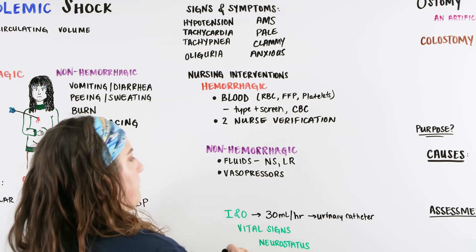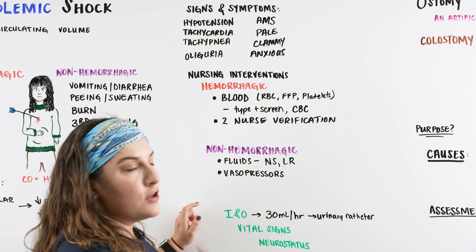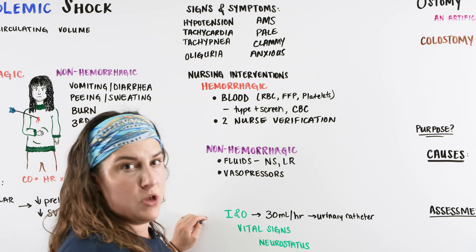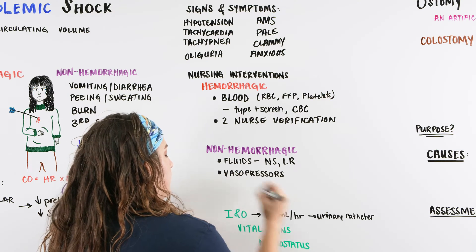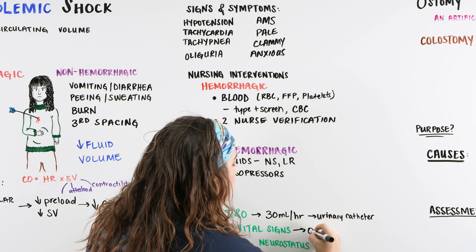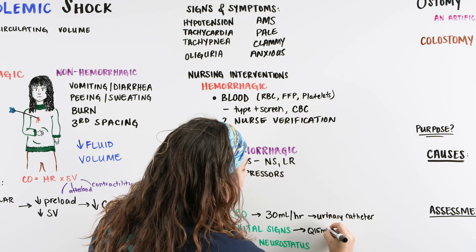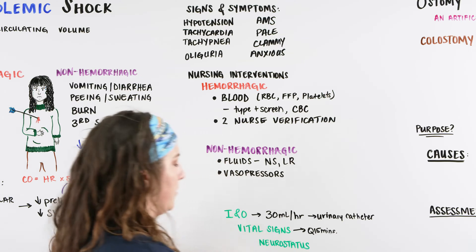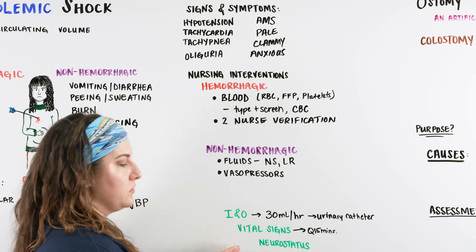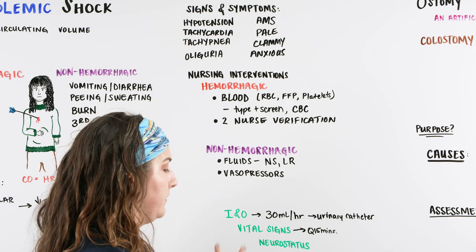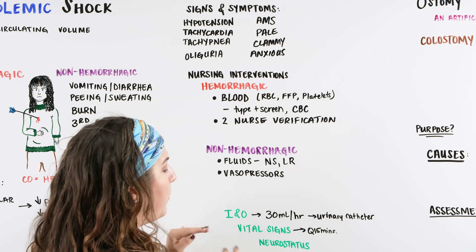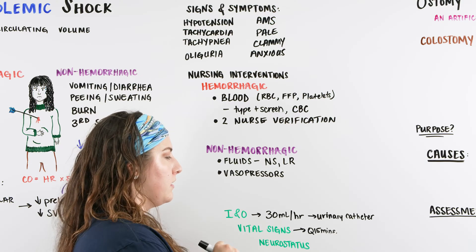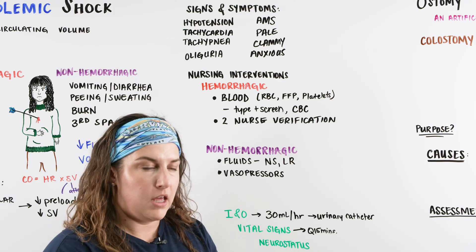We want to make sure that we have them on vasopressors and they're getting fluids. Maybe it is a GI bleed, so right now they might have to be on NPO. This patient is going to need vital signs — maybe every 15 minutes for a while in order to keep an eye on what their vital signs are doing. And we're going to be doing neurostatuses — checking on that neurostatus. If they were altered in the beginning, how are we going to be able to tell that this patient is getting better?